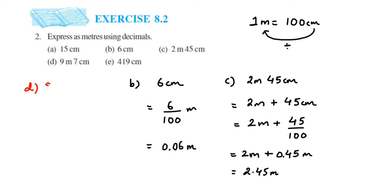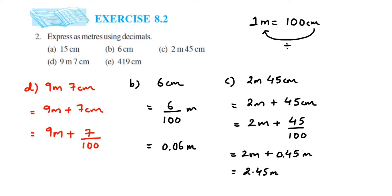Next: 9 meters 7 centimeters. Similar to the previous question — 9 meters plus 7 centimeters. We only convert the centimeters: 7 divided by 100 meters. Two zeros in the denominator, so two places from the right. We have only one digit, so add a 0: decimal, then 0 — giving 9.07 meters.